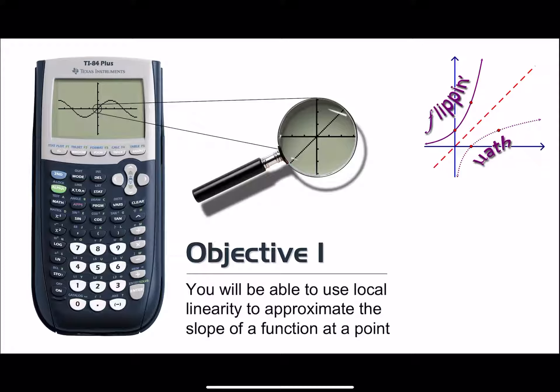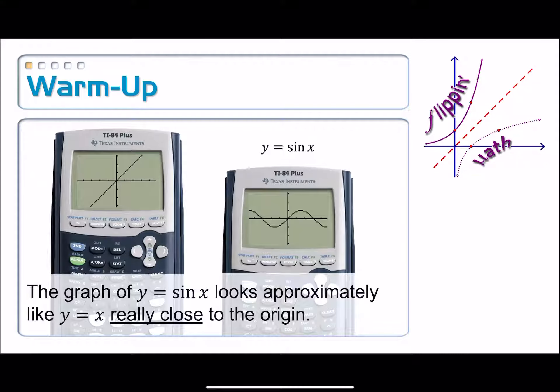So take a look. We've got a magnifying glass, and it is trained on a portion of the graph that looks like y equals sine x, right? And the picture in the magnifying glass looks like a straight line, like it's linear. And this calls to mind that opening activity, that warm-up activity.